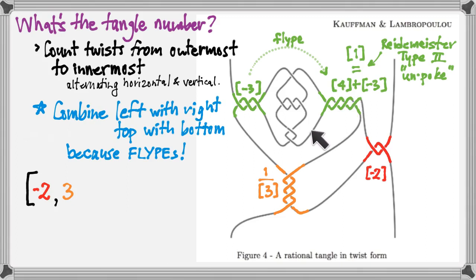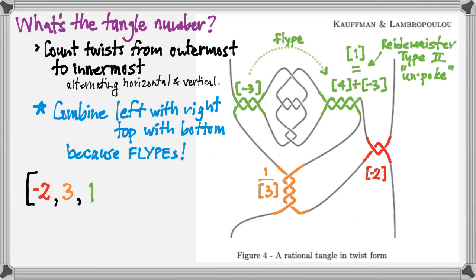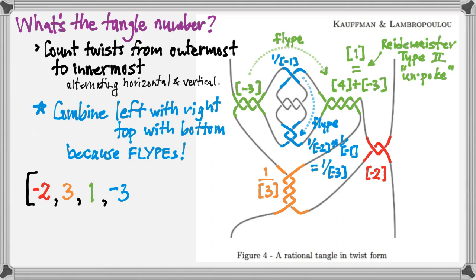Another way to think about what we've just done is as a flipe: in the original diagram, imagine turning this middle part around like a top — it will untwist three of the twists on the left while at the same time untwisting three of the four on the right, leaving a single positive twist on the right. That 1 becomes the next entry in my continued fraction. Now I've untwisted both left and right sets, and I just have this complex in the middle, which has some top twists and some bottom twists. Using a vertical flipe to combine them — a negative 1 vertical twist on top with a negative 2 vertical twist on the bottom — gives negative 3 vertical twists, making the next entry negative 3.